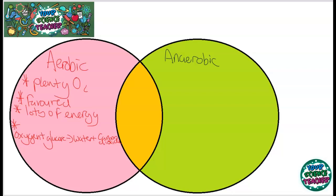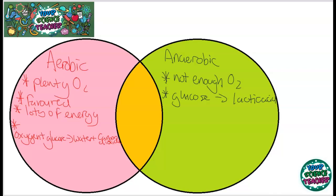The other type of respiration is called anaerobic respiration and this occurs where there is not enough oxygen. This could occur if you are exercising strenuously or even if you walk up a really tall mountain. Anaerobic respiration makes different products to aerobic respiration — it converts glucose into lactic acid. Lactic acid is that stuff which makes your muscles ache, and you can sometimes feel that after exercise. It takes time for that lactic acid to be broken down — that's called oxygen debt.